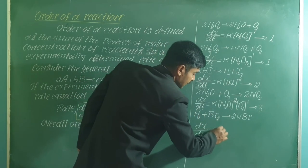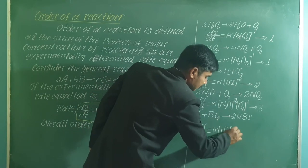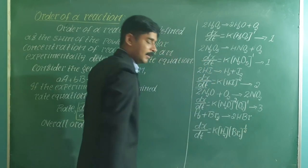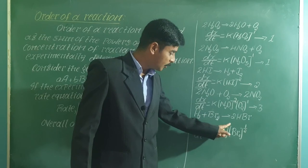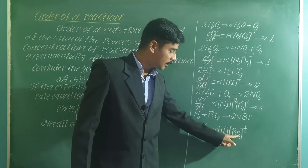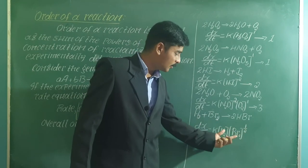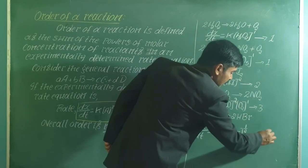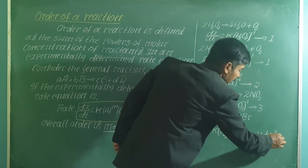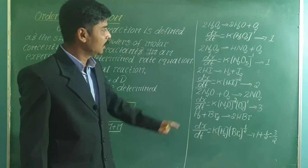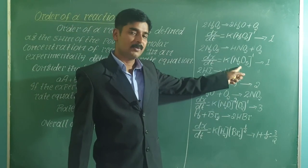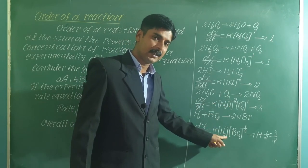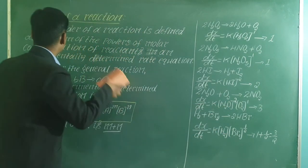For a reaction involving NO3 and O2 with the experimental rate equation dx/dt = K × [NO3] × [O2]^1, the sum of the powers is 2 + 1 = 3, so the order is 3. There is also a reaction with H2 and Br2 where the order with respect to H2 is 1 and with respect to Br2 is 1/2, giving an overall order of 3/2 — a fractional order reaction.